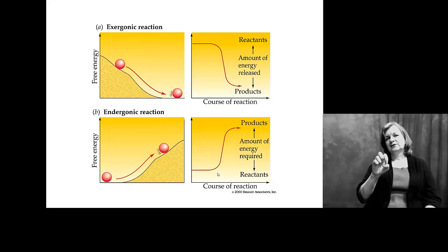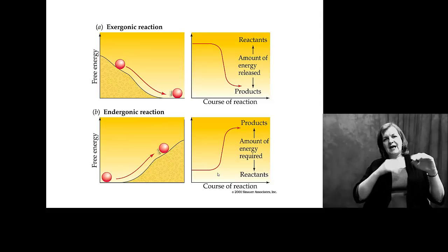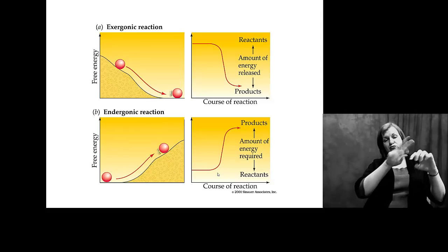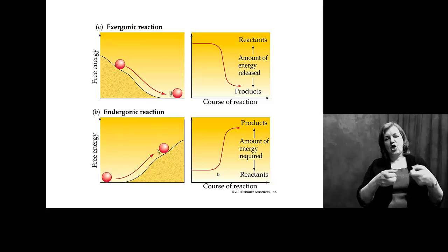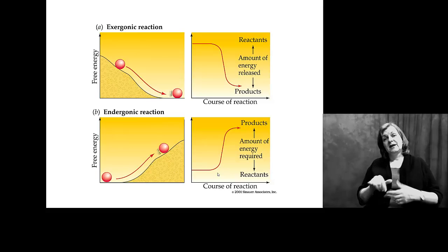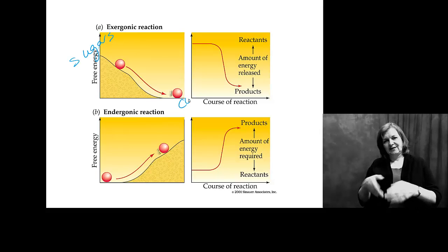So in exergonic reactions, textbooks always refer to it as kind of rolling a ball down the hill. There's a lot of energy available and as you roll it down the hill you lose that energy, the energy is released. And in the end you end up with a product that has very little energy associated with it. So this is starting out with our sugars and ending with our CO2.